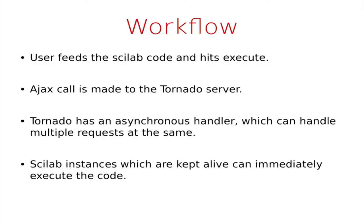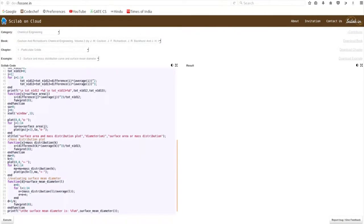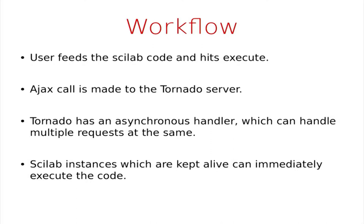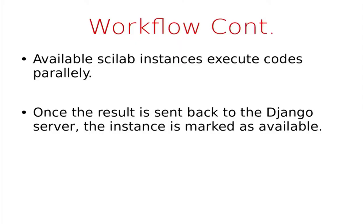In the workflow, the user selects an example from a textbook or writes their own code. When they hit execute, the code and other parameters are sent to the Django server. From there, an Ajax request is sent to Tornado. In Tornado, we have written an asynchronous handler which gives the request to one of the worker threads. Control is returned to the event loop to listen to other requests, allowing multiple requests at the same time. We maintain a pool of Scilab instances in the background. Whenever a request comes in, a free Scilab instance executes the code, is put back in the pool, and the result is returned to Django to be displayed in the browser.